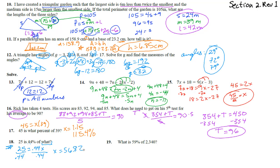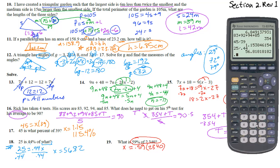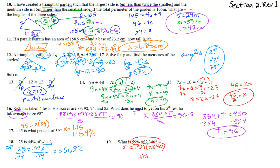Number 19: what is 59 percent of 2340? This isn't even an algebra problem — we just compute 0.59 times 2340, which equals 1380.6.